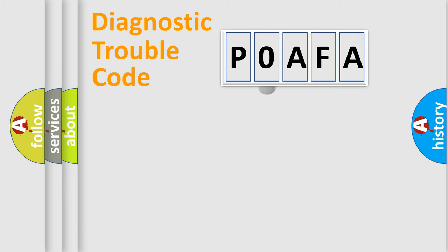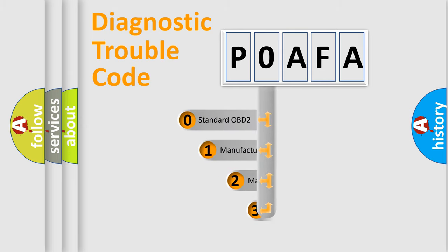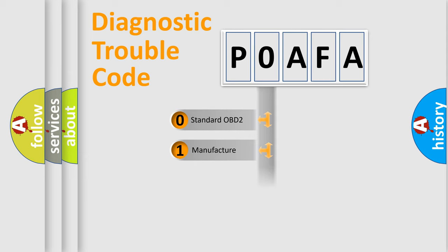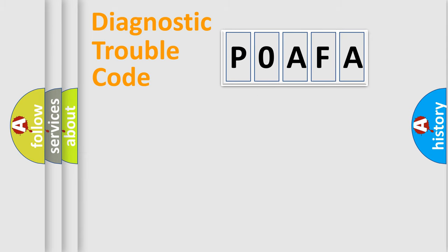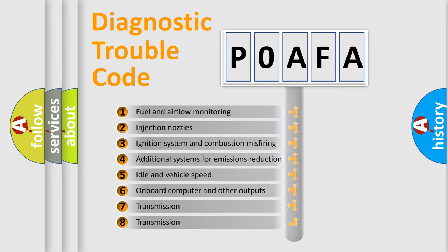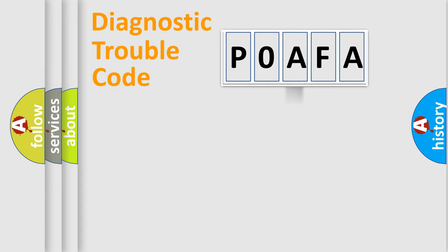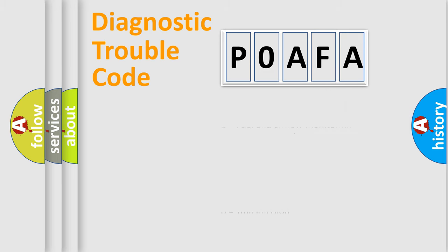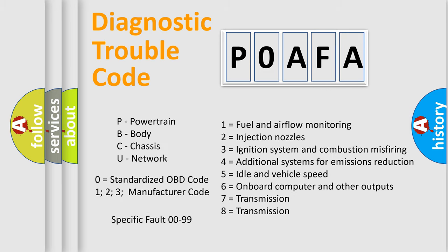This distribution is defined in the first character of the code. If the second character is expressed as zero, it is a standardized error. In the case of numbers 1, 2, or 3, it is a manufacturer-specific error expression. The third character specifies a subset of errors. The distribution shown is valid only for the standardized DTC code. Only the last two characters define the specific fault of the group — but this division is valid only if the second character code is expressed by the number zero.